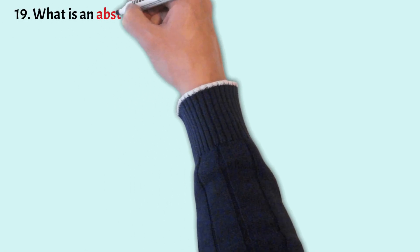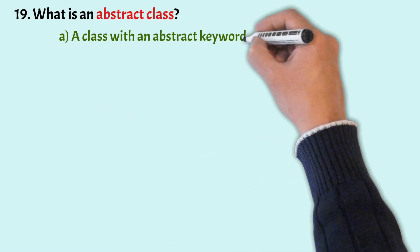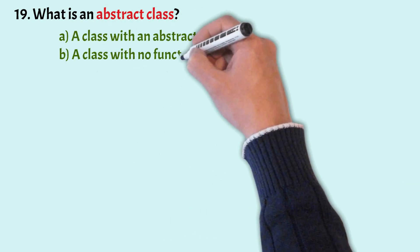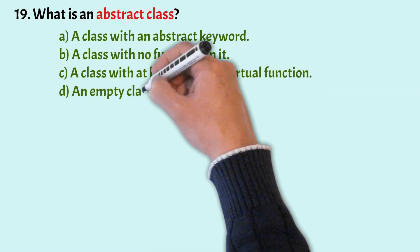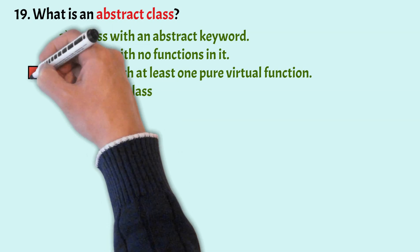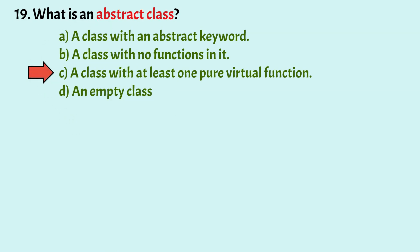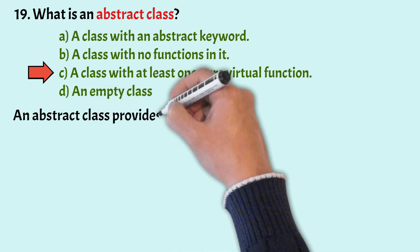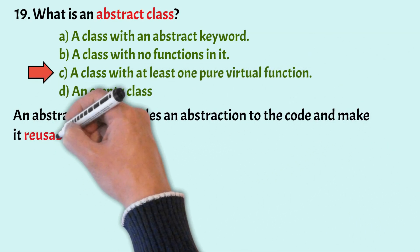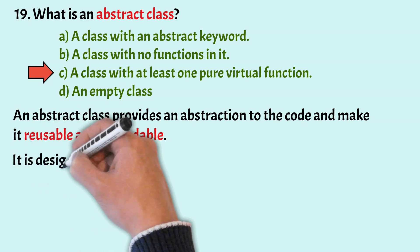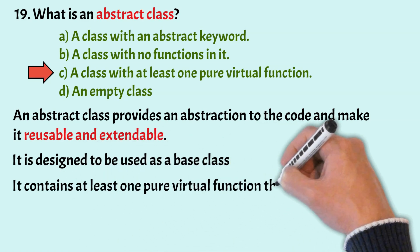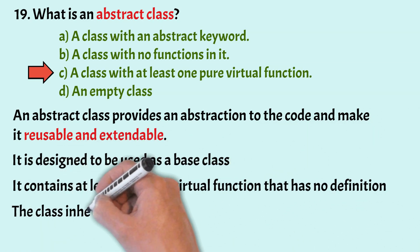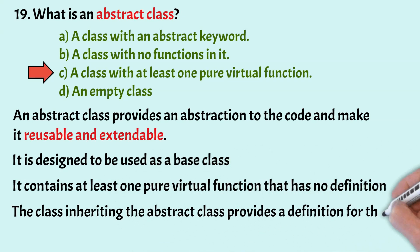What is an abstract class? The options are: a class with an abstract keyword; a class with no functions in it; a class with at least one pure virtual function; and an empty class. The correct answer is option C. An abstract class provides abstraction, making code reusable and extendable. It is designed to be used as a base class, contains at least one pure virtual function with no definition, and the inheriting class provides the definition.